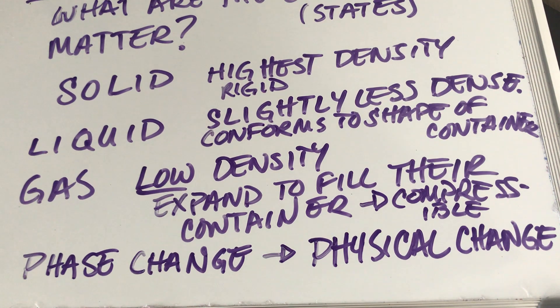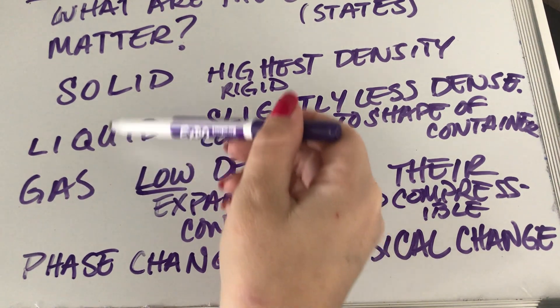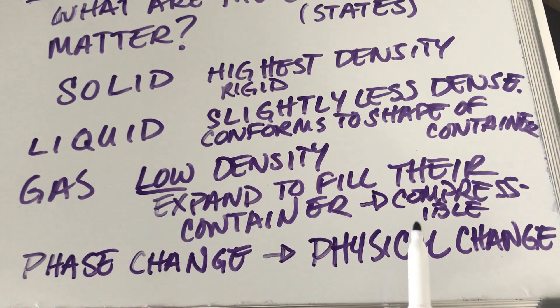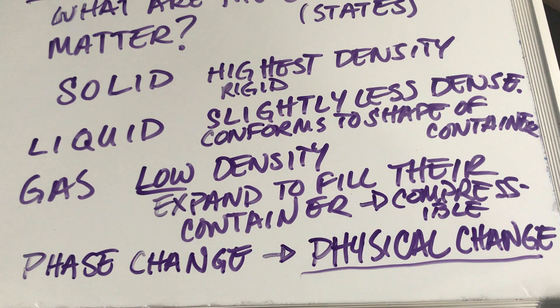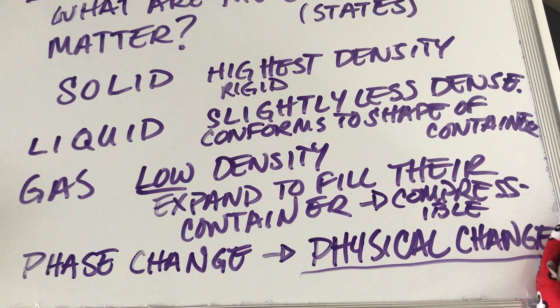I think that'll be a little bit easier to think about when we get into chapters two and three, because we'll talk a lot more about the periodic table, about compounds, elements, all of these things. So phase change, what do you want us to know for that? A phase change would be going from one of these physical states to another, right? Cool. I'm going to erase. Is that okay, guys?